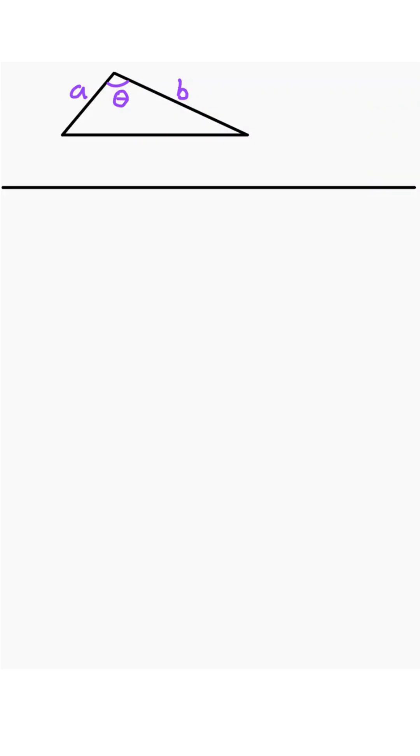Given side angle side, then the area of this triangle is equal to one half times one side times the other side times sine of the angle between those two sides.